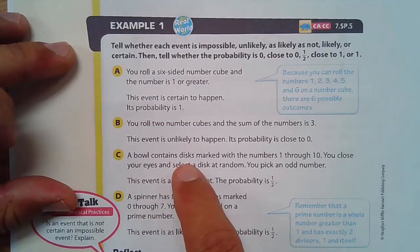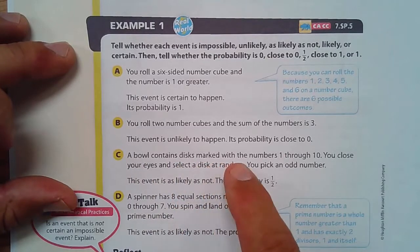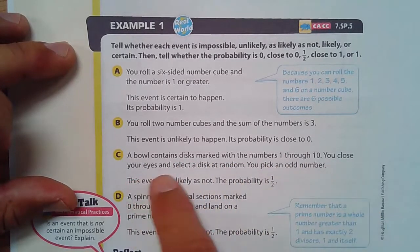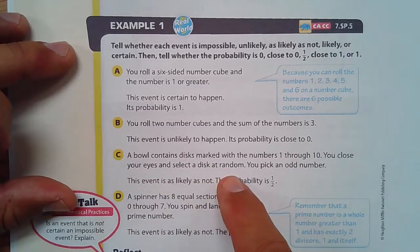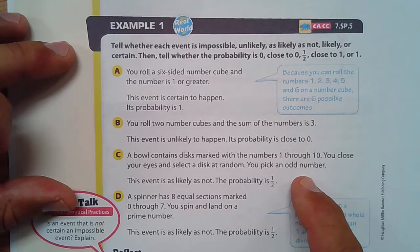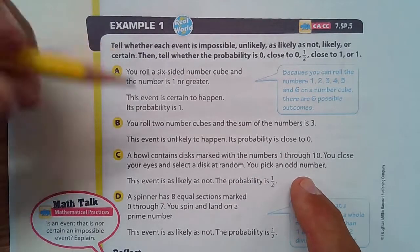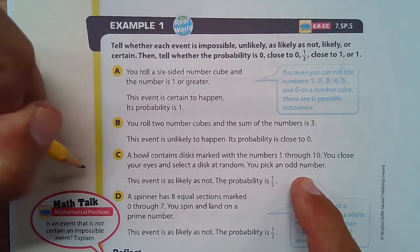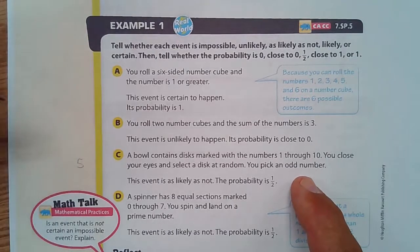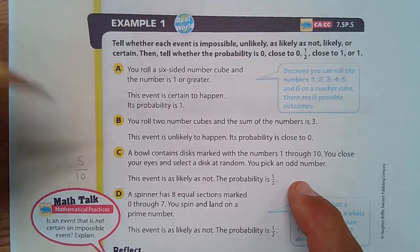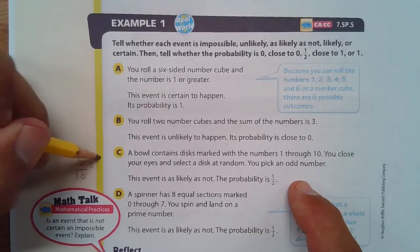A bowl contains discs marked with numbers one through ten. You close your eyes and select a disc at random and pick an odd number. There are five odd numbers out of ten discs, which simplifies to one half.